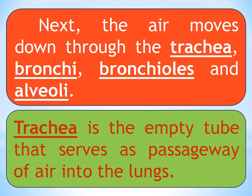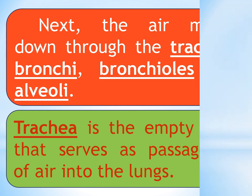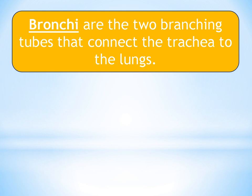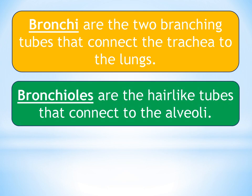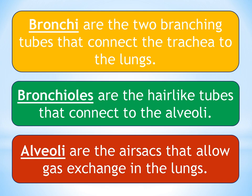The trachea is the hollow tube that serves as the passageway of air into the lungs. It is a long tube from your neck down to your chest. The bronchi are the two branching tubes that connect the trachea to the lungs, also called bronchial tubes, and serve as the primary divisions of the trachea leading into the right and left lung. The bronchioles are hair-like tubes that connect to the alveoli — minute, thin-walled branches of the bronchi. Lastly, the alveoli are the air sacs that allow gas exchange in the lungs, where the exchange of oxygen and carbon dioxide takes place.